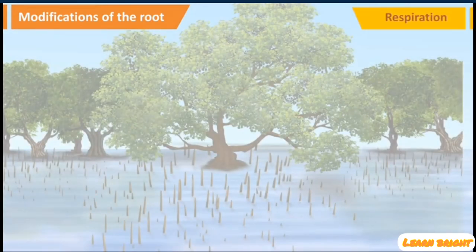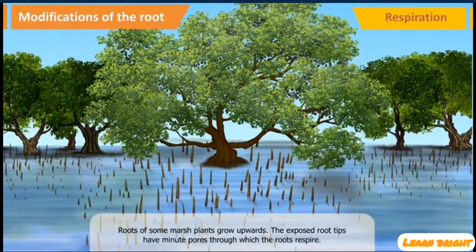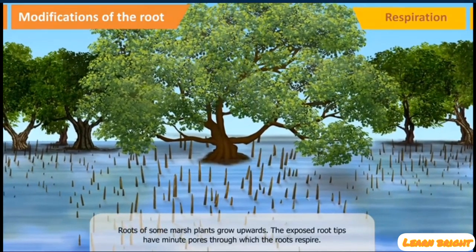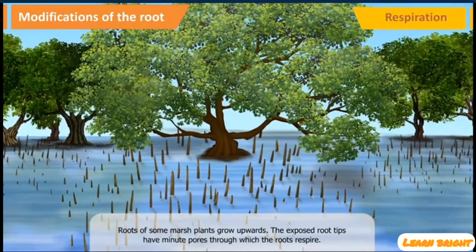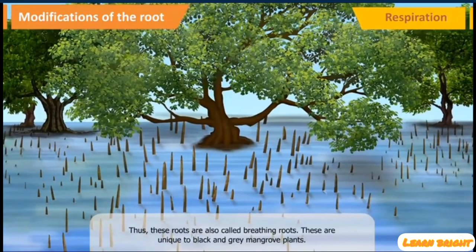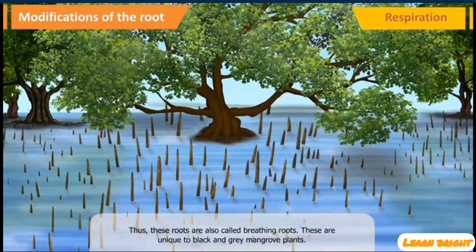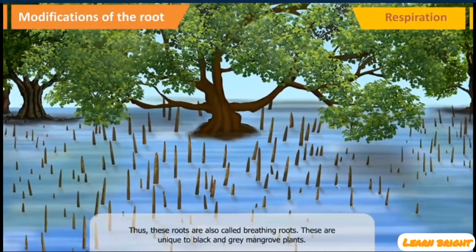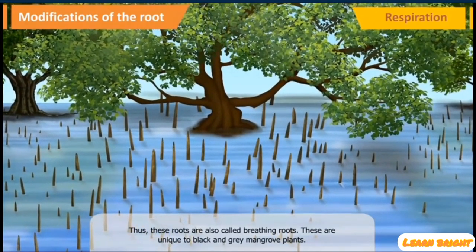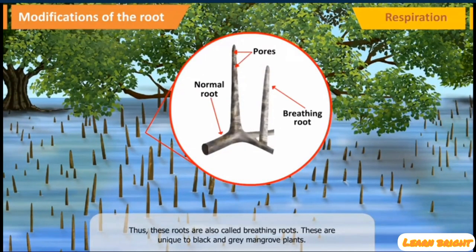Respiration: Roots of some marsh plants grow upwards. The exposed root tips have minute pores through which the roots respire. Thus these roots are also called breathing roots. These are unique to black and grey mangrove plants.